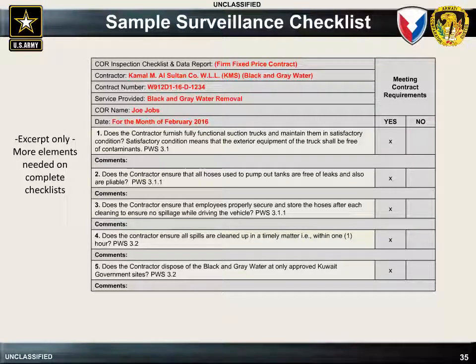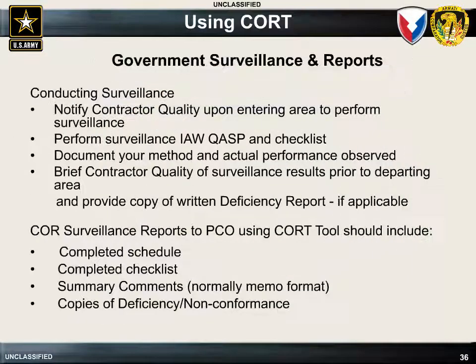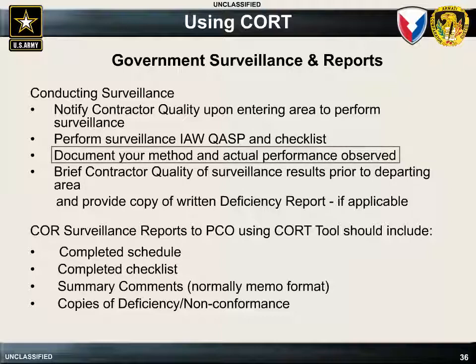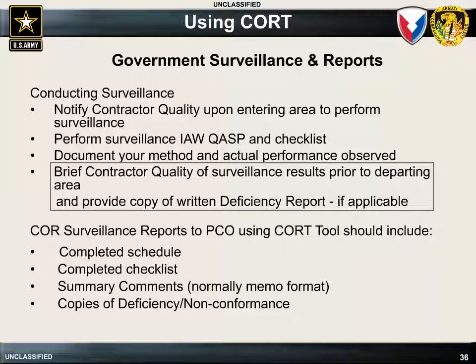This is a portion of a surveillance checklist used to monitor the contractor's performance on a black and gray water removal contract. Note that the evaluation criteria is clearly defined and that each relates to a specific portion of the contract's PWS. The COR will document whether the contractor met each requirement and will provide details to support each assessment. When conducting surveillance, the COR should notify the contractor's quality assurance personnel upon arrival, then perform surveillance in accordance with the QASP and surveillance schedule. Results are documented using the surveillance checklist, after which the COR will brief the contractor's personnel on results and provide written deficiency reports if applicable. The completed surveillance schedule and checklist should be uploaded into the COURT tool at the same time the COR completes their monthly status report.